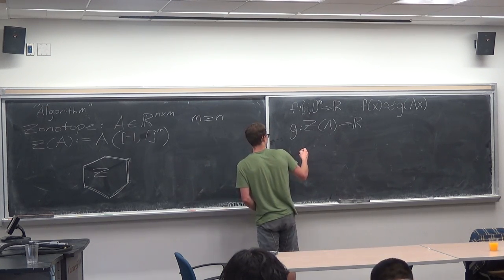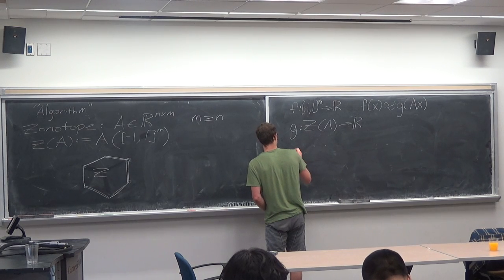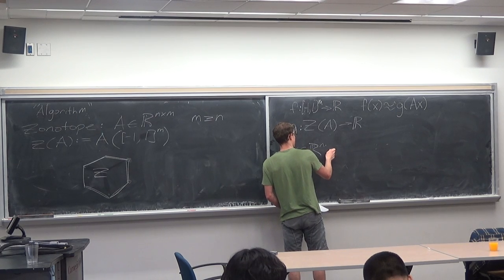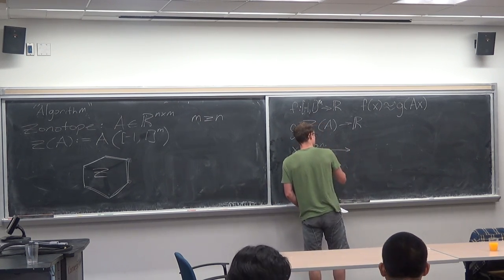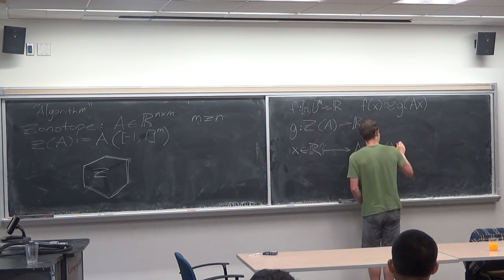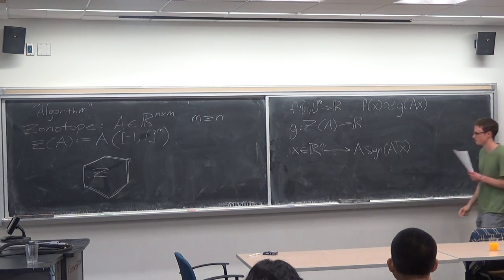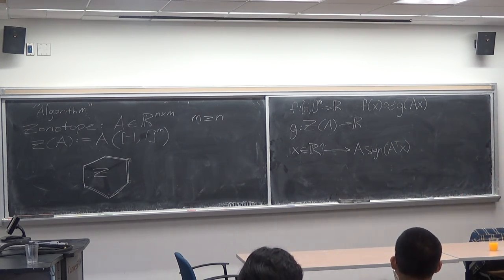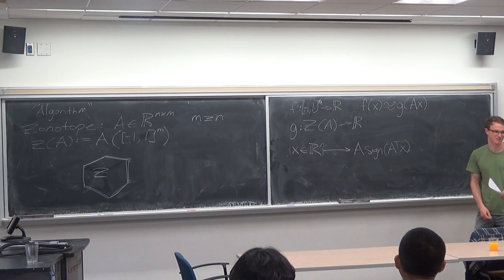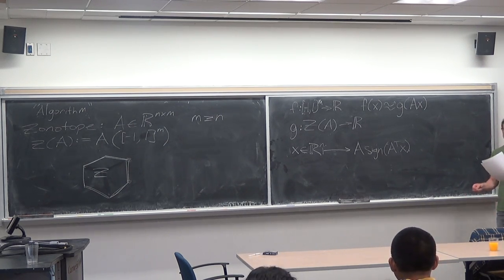What we're going to do is look at the map which takes x within R^n and maps it to A·sign(A^T x). Does anyone see why that should be a vertex? It doesn't feel too obvious to me. I'm just waiting for the ACO people to be like, oh no, that's clear.